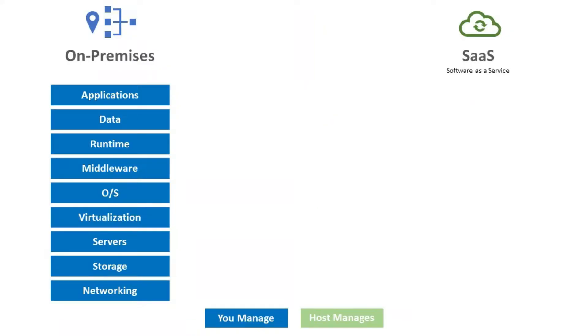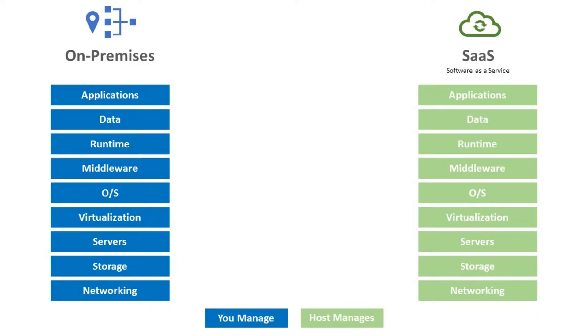To differentiate between cloud computing and SaaS, understand that SaaS is one of the offerings within cloud computing. SaaS stands for software as a service. In SaaS, the vendor providing the software is responsible for everything — whether it is networking, storage, servers, virtualization, operating system, middleware, database, and applications. The vendor is responsible for maintaining all of it. Cloud computing is more than SaaS — there is also platform as a service and infrastructure as a service.